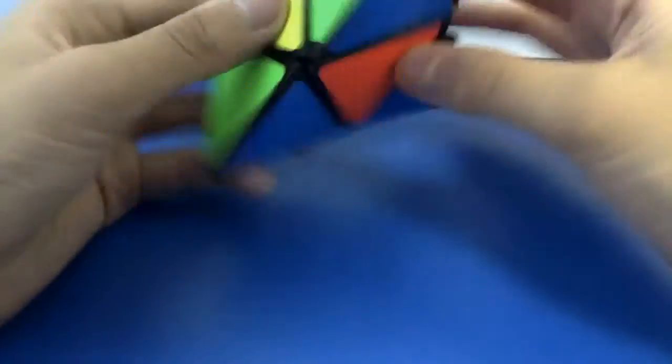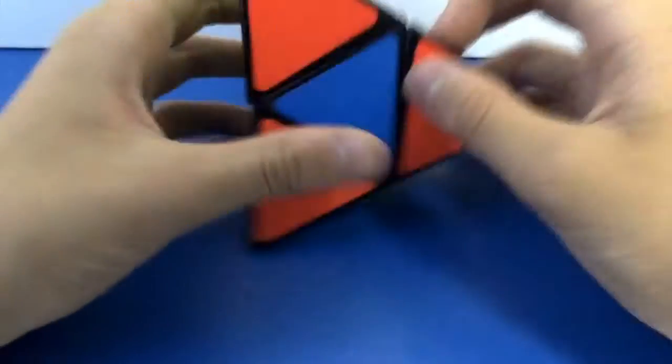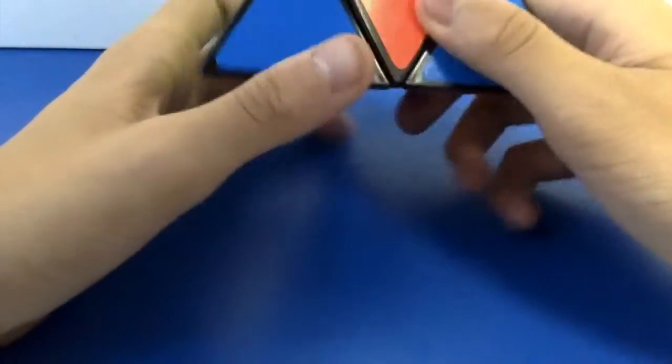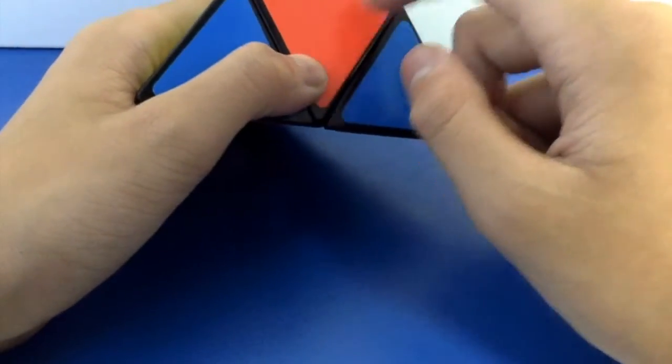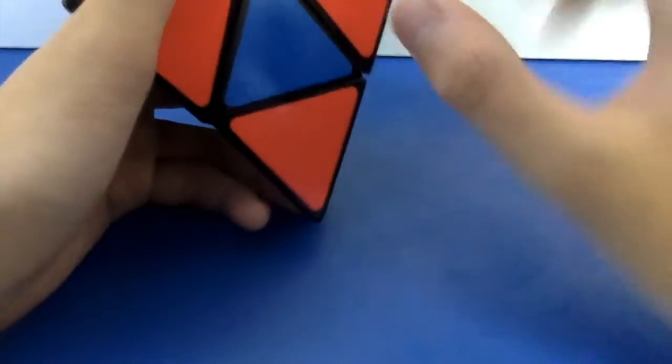And now when you go back, you can see these two are opposite and these two are opposite. And now it's pretty easy. So you just, this side face U.